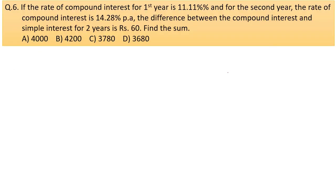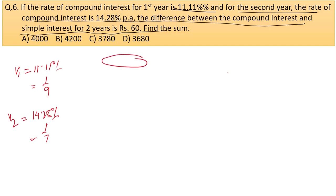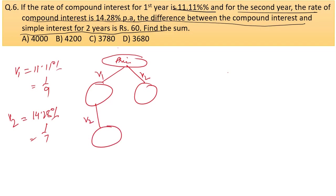The next question: if the rate of compound interest for the first year is 11.11% and for the second year is 14.28% per annum, and the difference between compound interest and simple interest for two years is rupees 60, find the principal. Here, 11.11% = 1/9 and 14.28% = 1/7.